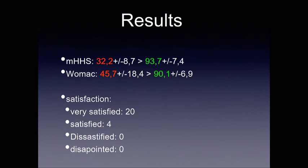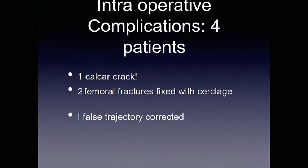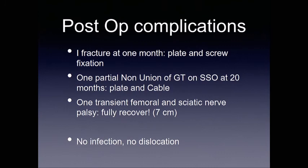My feeling is this is a patient group where I give the most improvement. They are miserable, and they become — I don't say happy — but it completely changes their life. The level of satisfaction is very high, and nobody is dissatisfied. We had a few operative complications. Usually those patients have bad bones. I had one fracture, two femoral fractures fixed with cerclage — usually not something really big, and a fault strategy we correct during surgery. Post-operative complications: one fracture at one month, two plate-and-screw fixations that went very well. One partial non-union at the GT, probably on the worst case I've done. One transient femoral nerve palsy — a limb lengthening of seven centimeters — but luckily she fully recovered in six months. No infection, no dislocation.